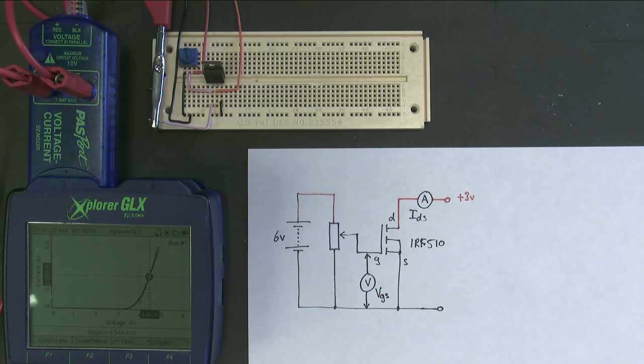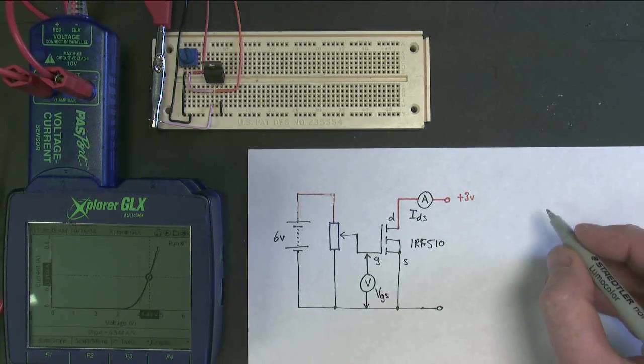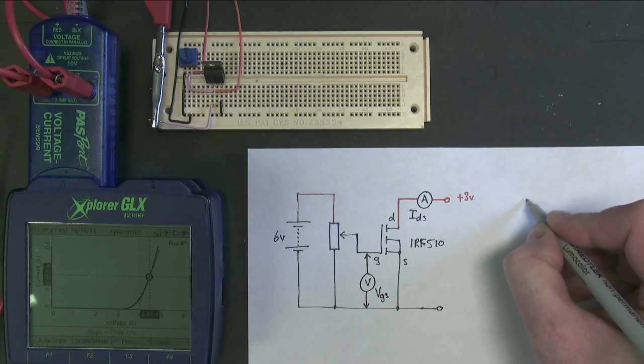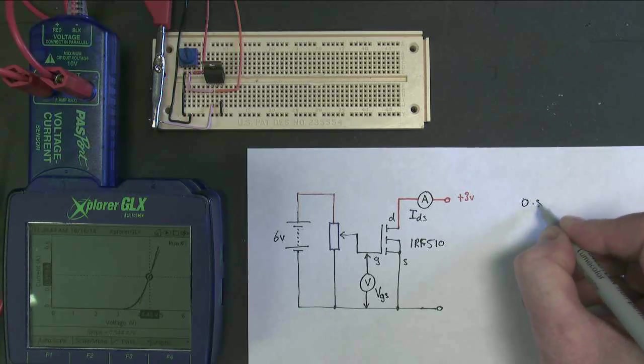Now, the gradient that I've got here, you can just about see on the data logger, is 0.544. So I'm going to write that value down. Actually, I'll write it up here. So it's 0.544.